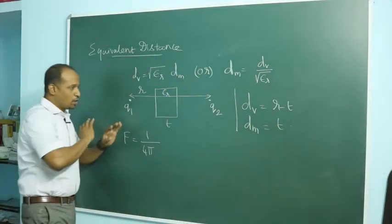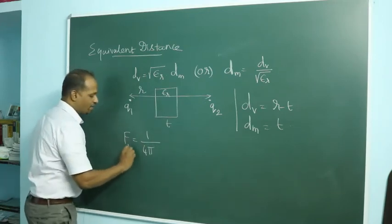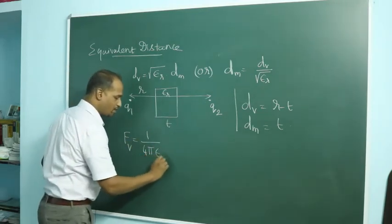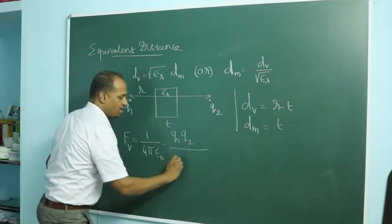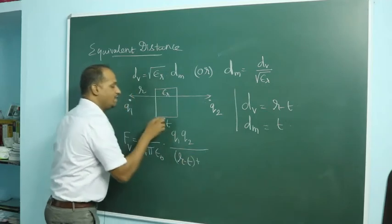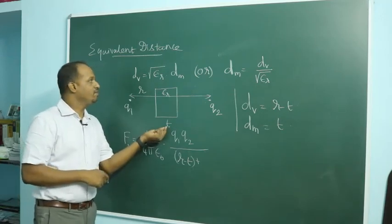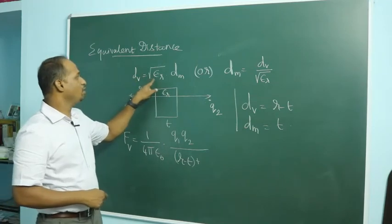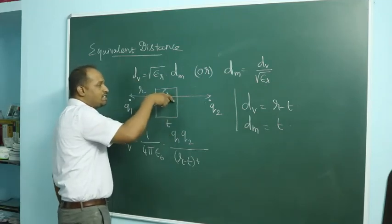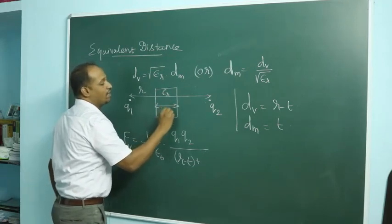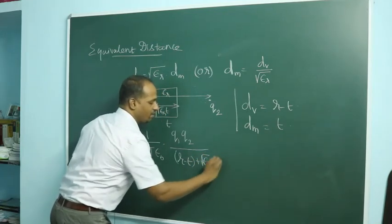We can write the total force entirely in terms of vacuum. The vacuum distance is r minus t. For the dielectric slab of thickness t, the equivalent vacuum distance is root(epsilon_r) times t. So the total effective vacuum distance becomes (r minus t plus root(epsilon_r) times t), and the force is 1 over 4 pi epsilon_naught times q1 q2 over that whole quantity squared.